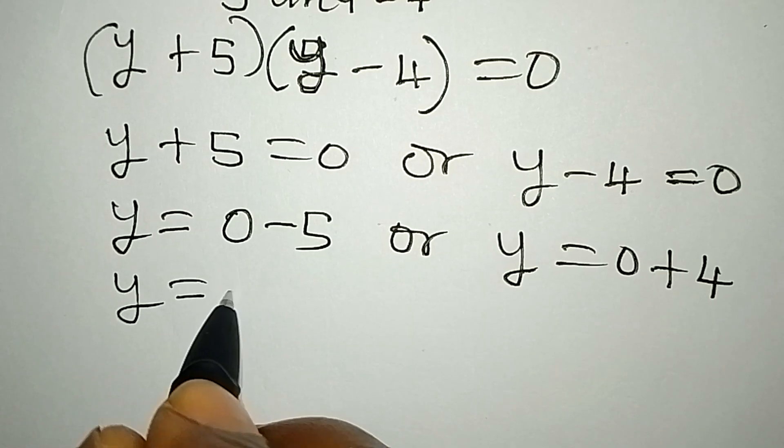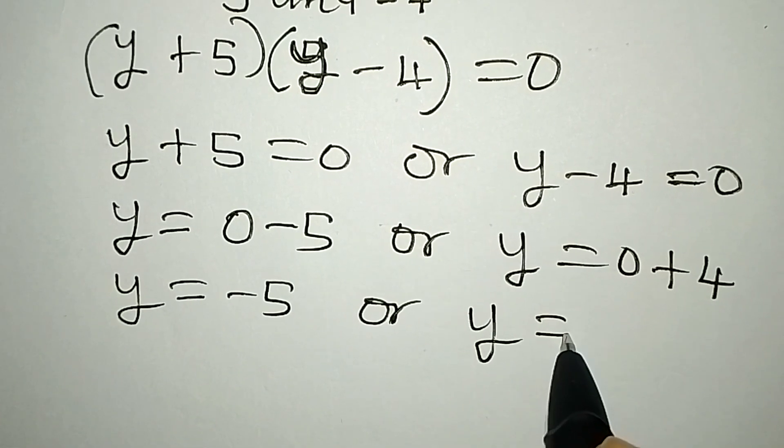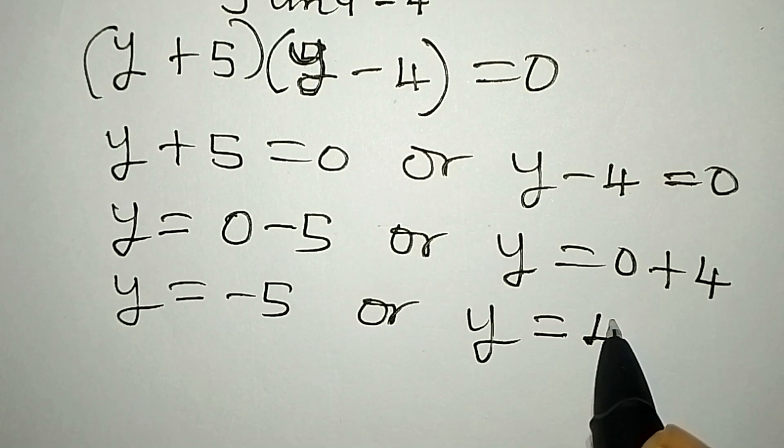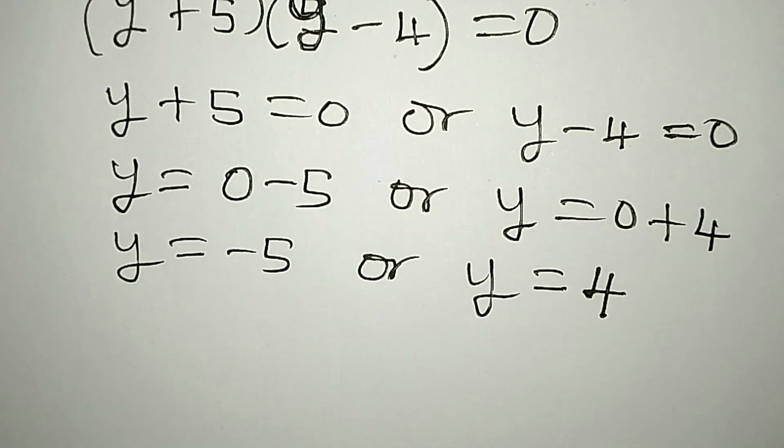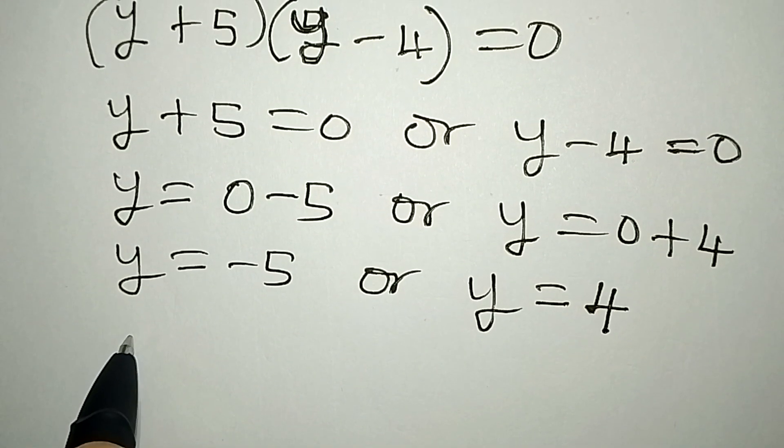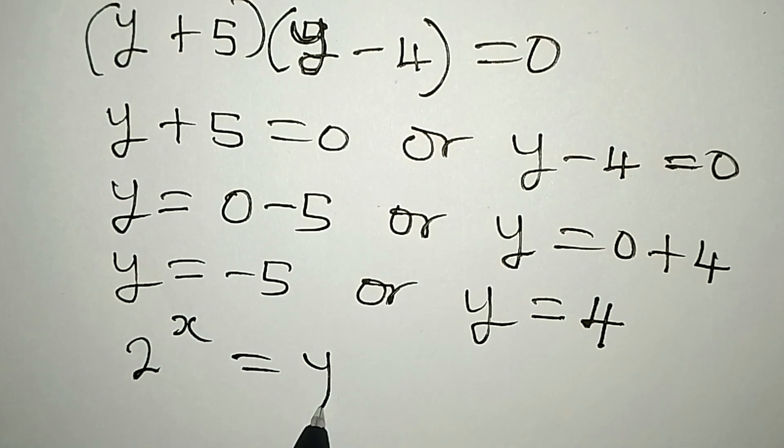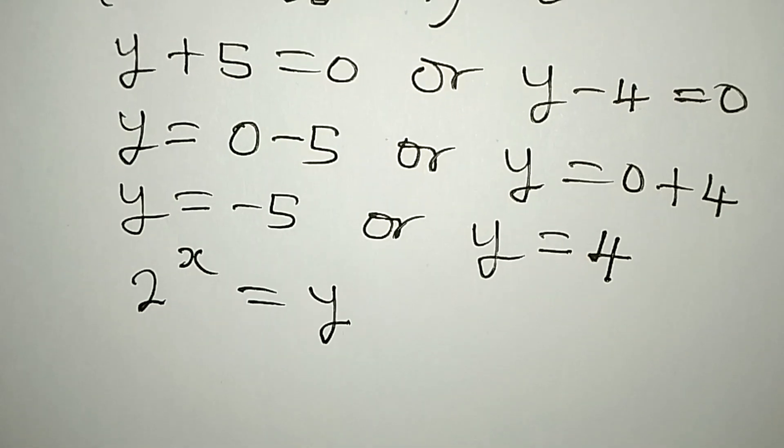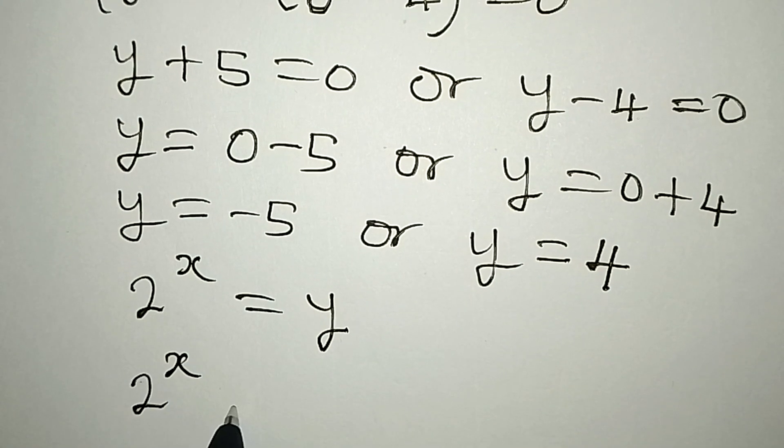Y from here equals minus 5, or y equals 4. Let's keep going. This is all we have, but then remember when we say that 2 to the power of x is equal to y.